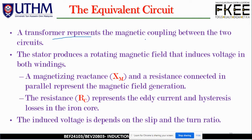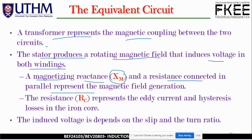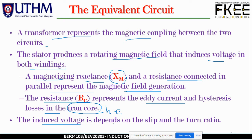A transformer represents the magnetic coupling between two circuits. The stator produces a rotating magnetic field that induces voltage in both the stator and rotor windings. The magnetizing reactance XM and a resistance RC connected in parallel represent the magnetic field generation. The resistance RC represents the eddy current and hysteresis losses in the iron core, known as core losses. The induced rotor voltage depends on the slip S and the turns ratio.